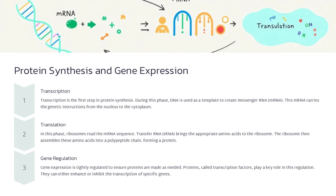Genetic variations, specifically single nucleotide polymorphisms (SNPs), are the most common type of genetic variation. SNPs occur at a single base in the DNA sequence and can affect how genes function and produce proteins. Understanding SNPs is crucial for identifying genes associated with various diseases.